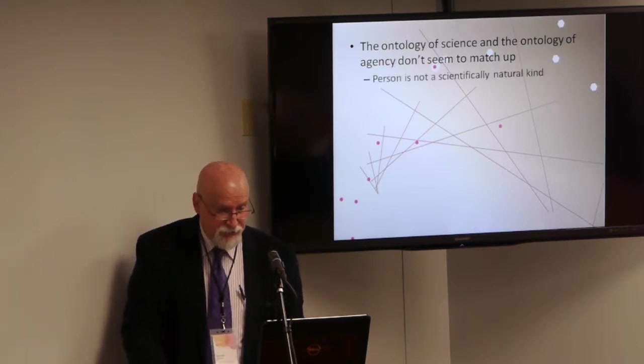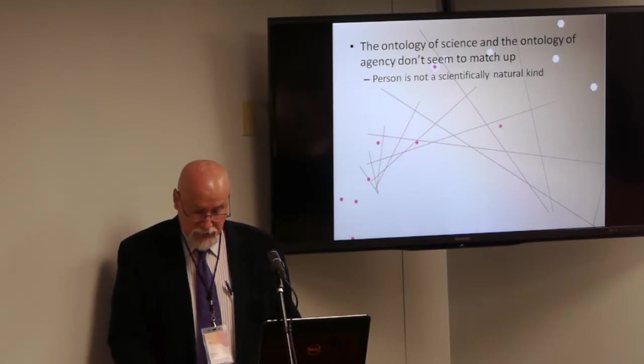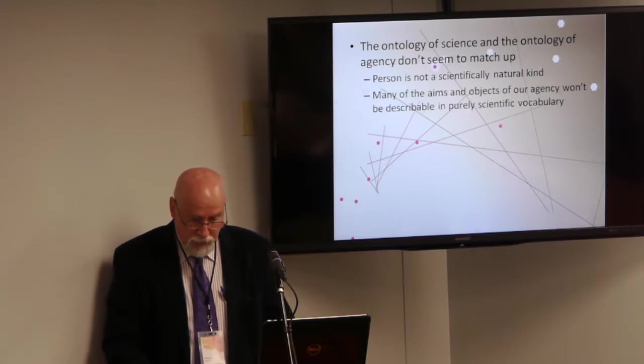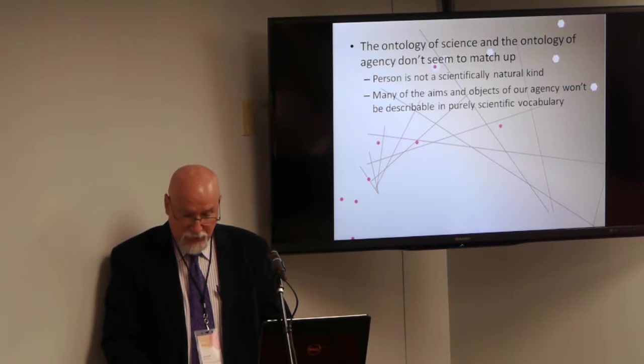There would thus have to be a mutual accommodation of the ontology science drives us to adopt and our conception of ourselves and the world in which we act as agents. But the problem becomes evident for the descriptive ontology of science doesn't quite match up with the prescriptive ontology of agency in two different dimensions. First, person is not a scientifically natural kind, so agents will not be salient objects in the scientific image. Second, nor will be many of the aims and objects of our agency.